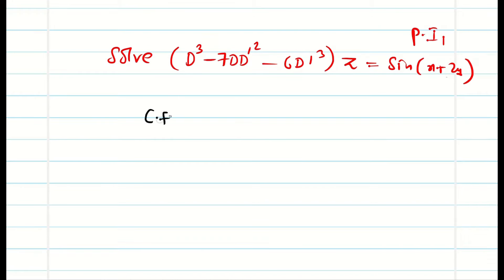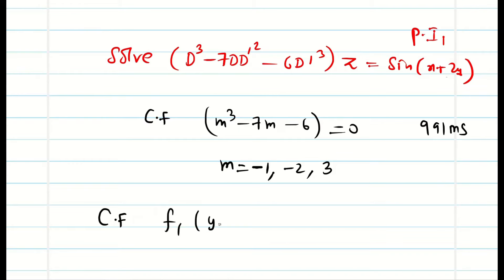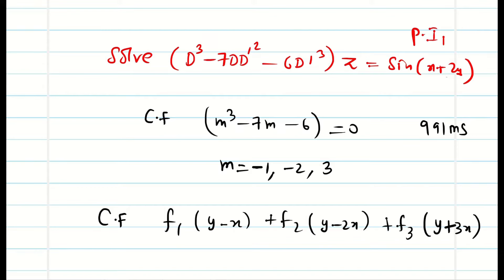For the CF I will directly write the answer. The auxiliary equation is m³ - 7m - 6 = 0. Use your Casio 991MS calculator to find the roots — don't waste time solving the cubic equation manually. The roots are -1, -2, and 3. So my CF is f₁(y - x) + f₂(y - 2x) + f₃(y + 3x).